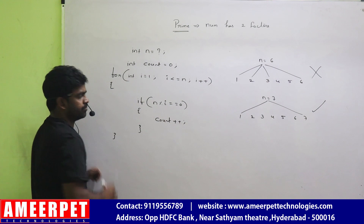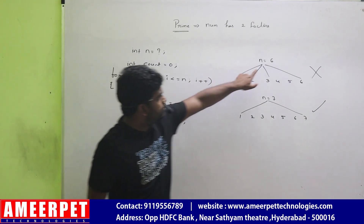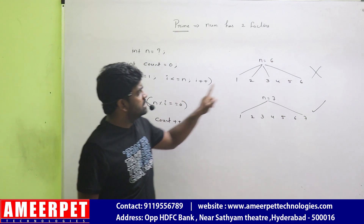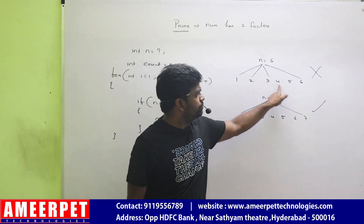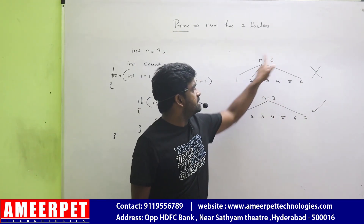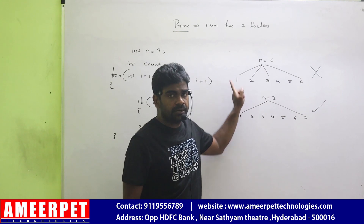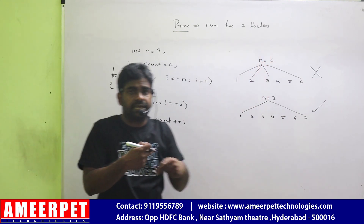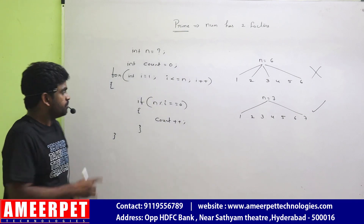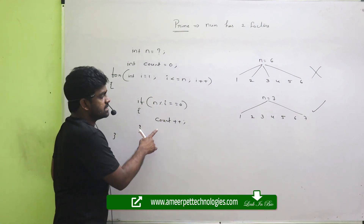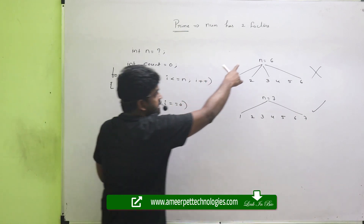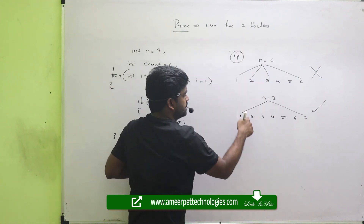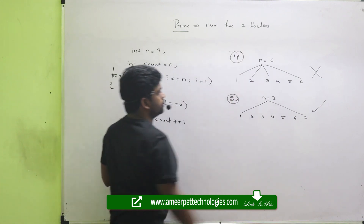Same logic — n means the given number, say six. We check if n is divisible by i, where i changes every time: one, two, three, four, five, six — checking one by one. Whenever it is divisible, we are just counting. In the first case, count value is four. In the second case, count value is two.